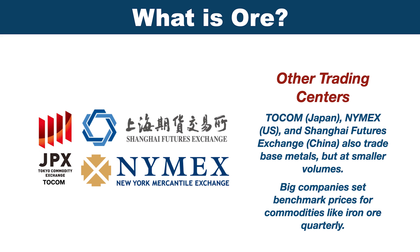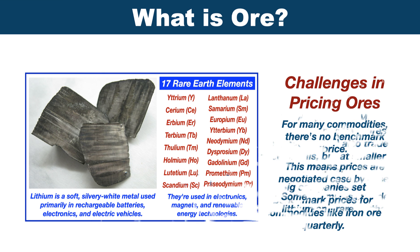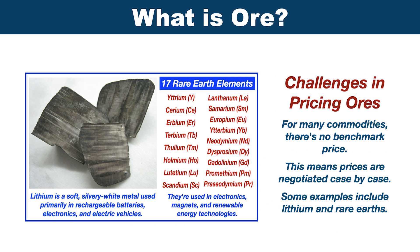Big companies set benchmark prices for commodities like iron ore quarterly. For many commodities, there's no benchmark price, which means prices are negotiated on a case-by-case basis. Some examples include lithium and rare earths.